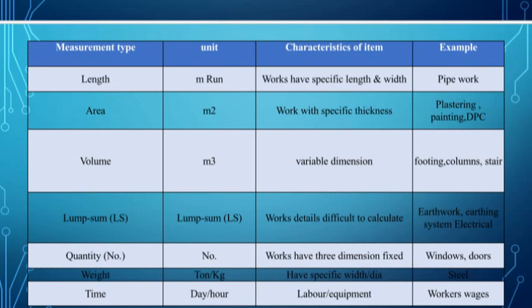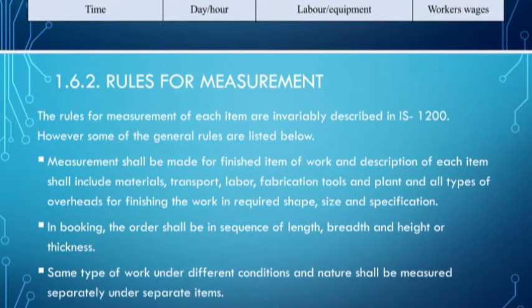Last is number - any piece of material in a finished state is quantified as a number, like doors, windows, etc., as you can see over here. Number one: length is expressed in running meters. Characteristics of the item are as following - work has a specific length and width, example is pipe work. Second is area, expressed in meter square, example is plastering, painting, DPC work, both vertical and horizontal. Volume: meter cube, variable dimension, footing, column, staircase. If the thickness of slab is not given, that is also considered lump sum. Work that is difficult to calculate like earthwork or electrical system. Quantity by number like doors, windows, etc., those having some fixed value. Weight - steel, stays are considered in this category. Time - labor can work eight hours per day, so that's why day per hour worker wages will be charged.